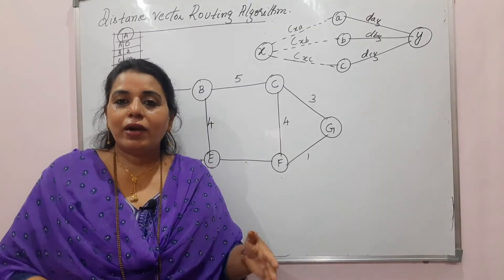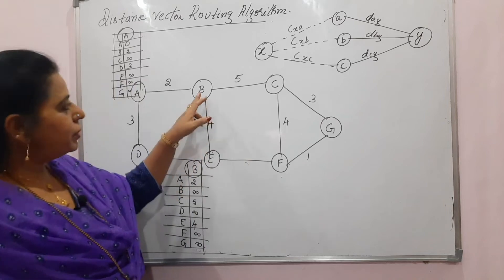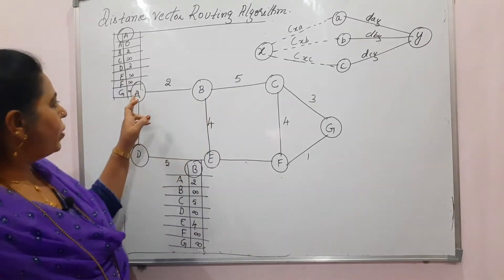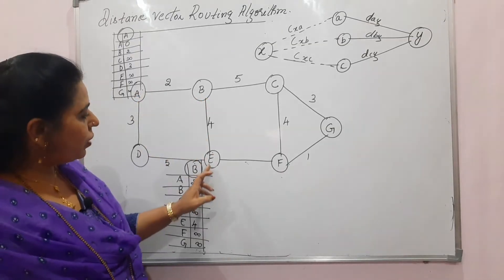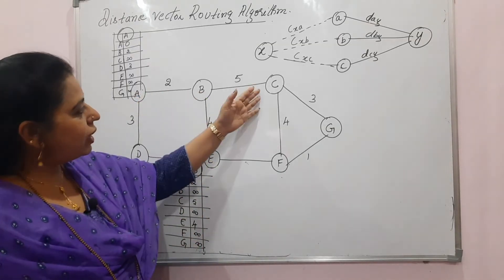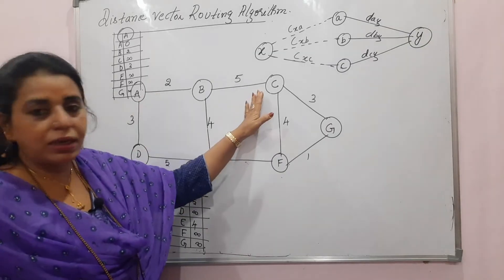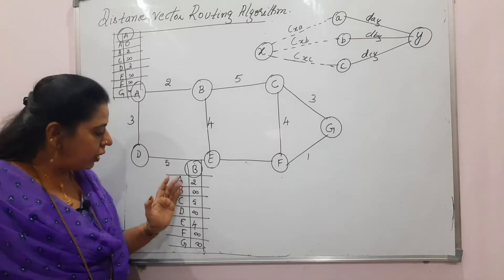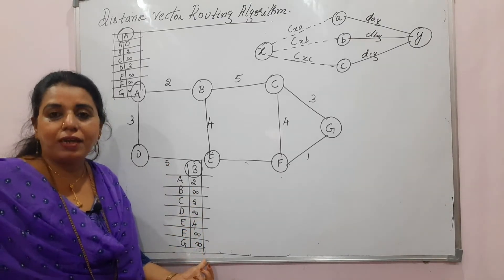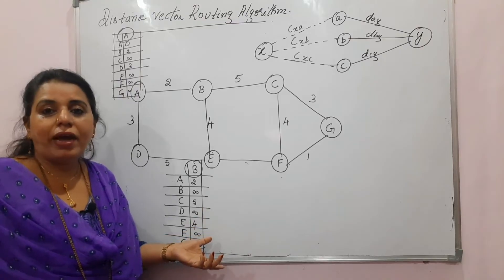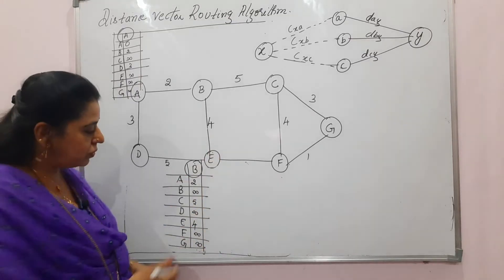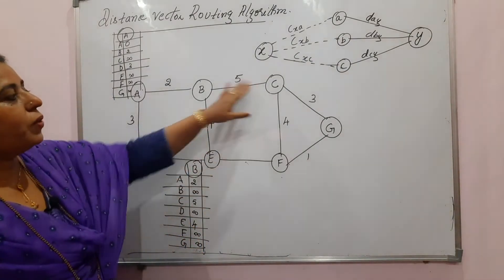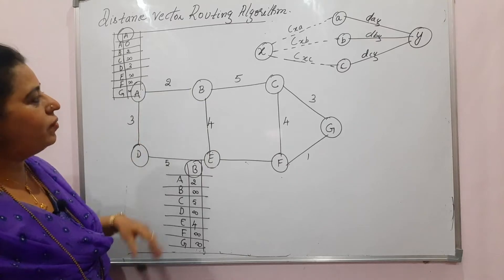Initially everyone maintains only neighbor information. Later they start exchanging their information — these distance vectors are sent to their neighbors. Suppose B will receive the distance vector from C, from A, and from E. Once it receives from all three connected nodes, it can update its distance vector. The values initially written as infinity may now get some finite values.